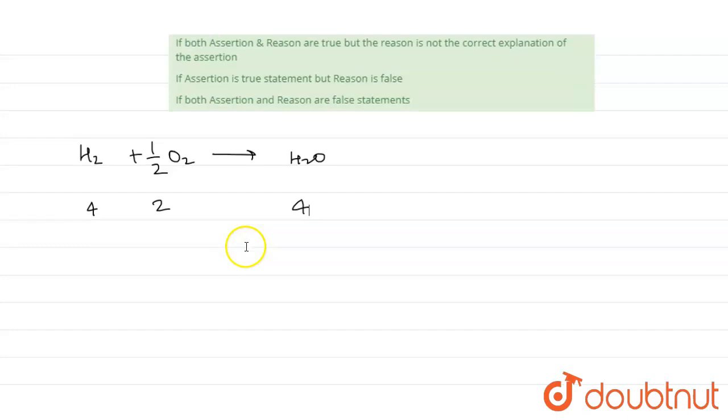So first of all, we don't know which is the limiting reagent, so let's take H2 as limiting reagent. When we are taking H2 as limiting reagent, then H2 will be consumed totally, so 4 minus 4 will be equal to 0. Now here it will be 2 minus 4 divided by 2, because the stoichiometry is half, so it will become zero. So that's why here you can see that